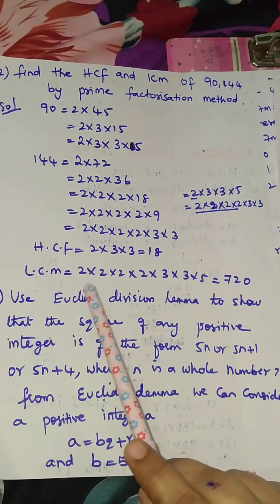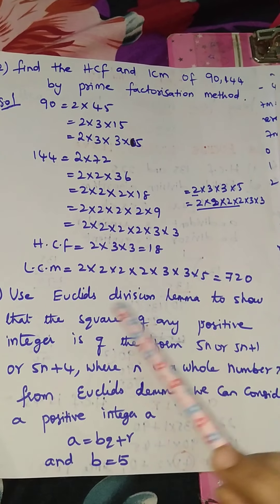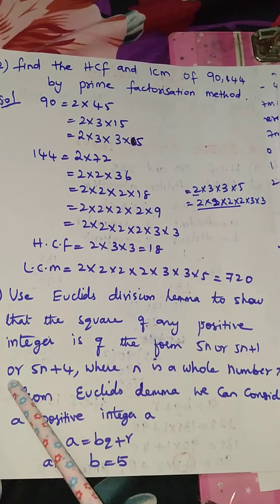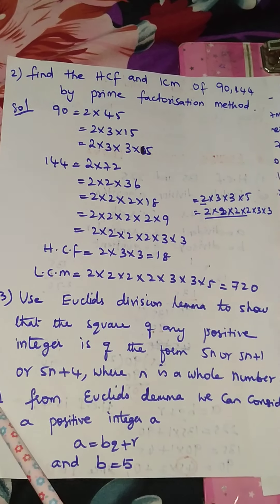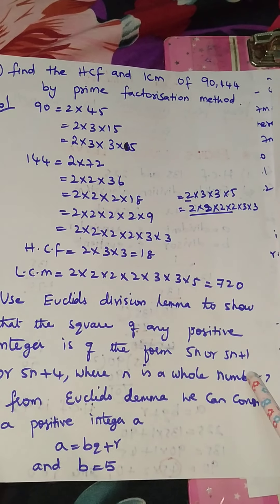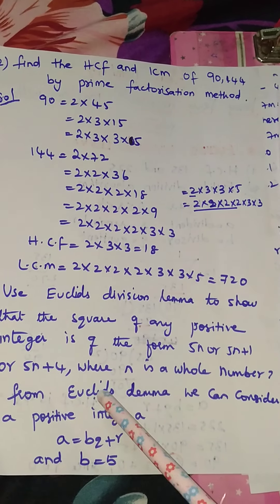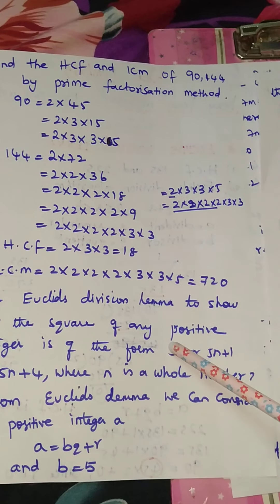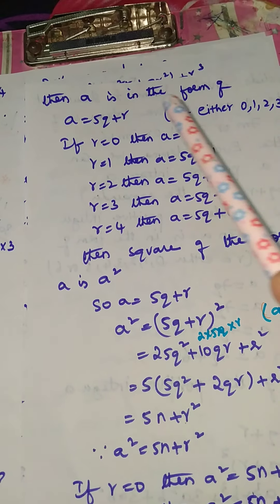Third problem: use Euclid's division lemma to show that the square of any positive integer is of the form 5n, or 5n plus 1, or 5n plus 4, where n is a whole number. From Euclid's division lemma, we consider a positive integer a: a equals bq plus r. Here b is 5.